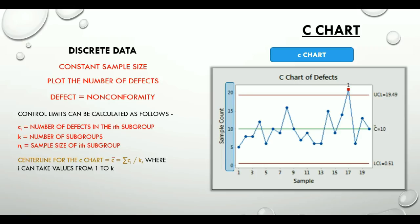The upper and lower control limits for a C chart are C-bar ± 3 times the square root of C-bar.